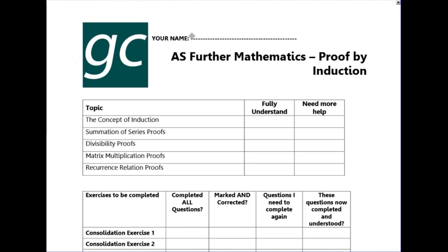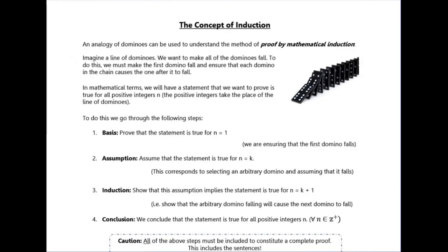In this pack we're going to look at the idea of proof by induction. A good analogy for proof by induction is a line of dominoes falling over. To guarantee that all the dominoes fall over, we need to make sure that the first domino falls over, then we need to make sure that if any domino in your line falls over, the next one must also fall over.